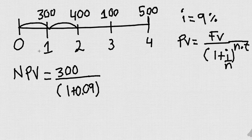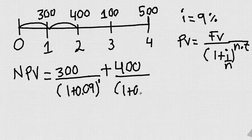And since it's only one year, you can just put a one here, but you don't have to, plus 400 over one plus 0.09, and then you square it.